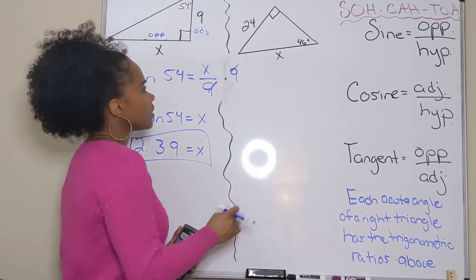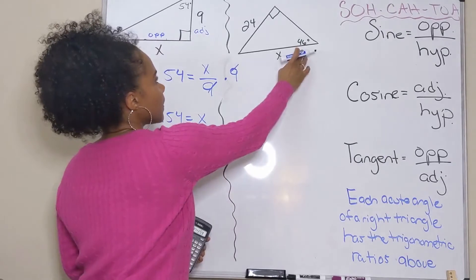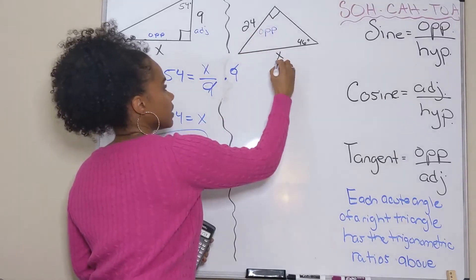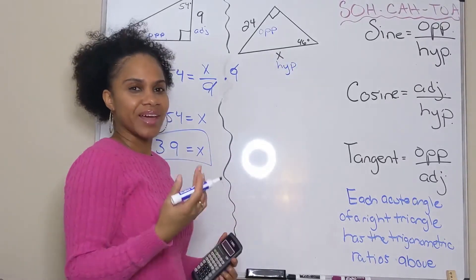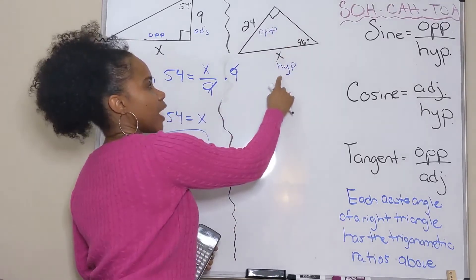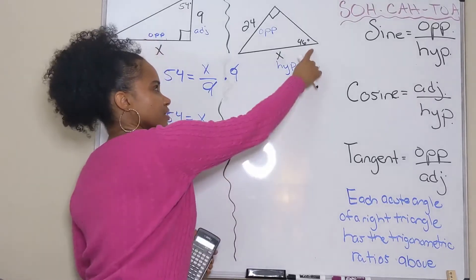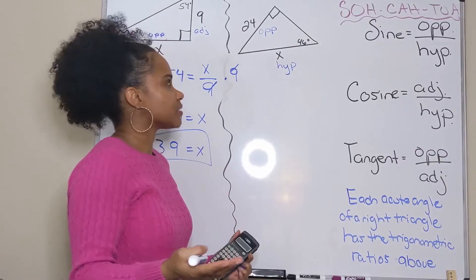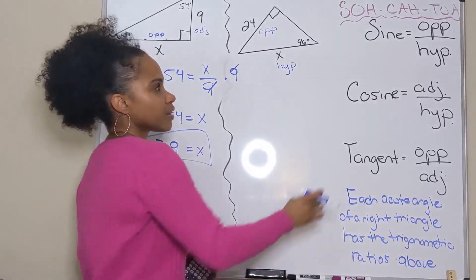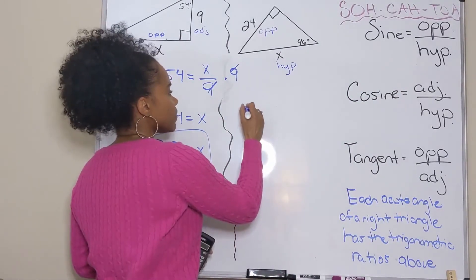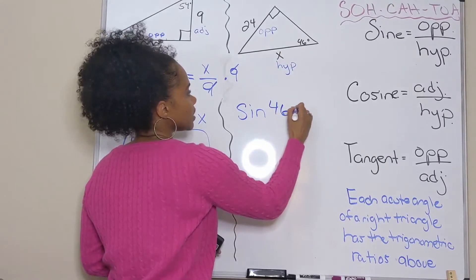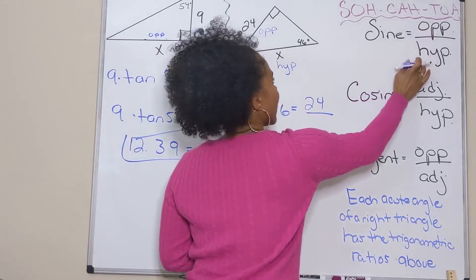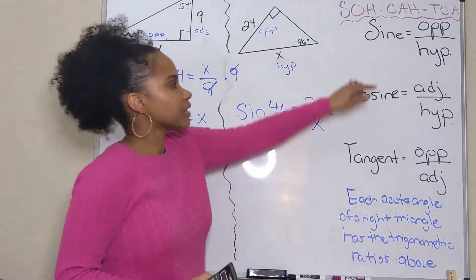Let's try the second example. In reference to this 46-degree angle, I have the hypotenuse and the opposite side. Remember: the hypotenuse is always opposite the right angle — that takes precedence over the adjacent designation. So with opposite and hypotenuse, the function to use is sine. The ratio is: sine of 46 degrees equals opposite over hypotenuse, so sine of 46 equals the given number over x.